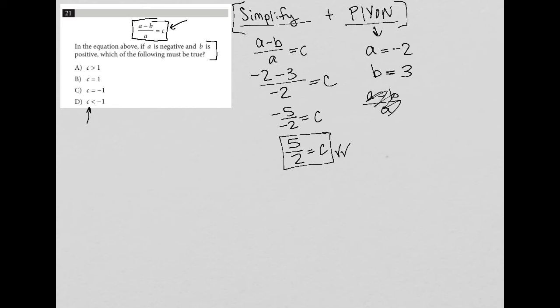So choice A says that C is greater than one. Well, yeah, it definitely is. Five halves is equivalent to 2.5, which is definitely larger than one. And again, anytime I plug in my own number, I just want to make sure I'm trying every single answer choice. So even though A works, I'm not going to just choose it and move on. Let's make sure that it's the best answer.